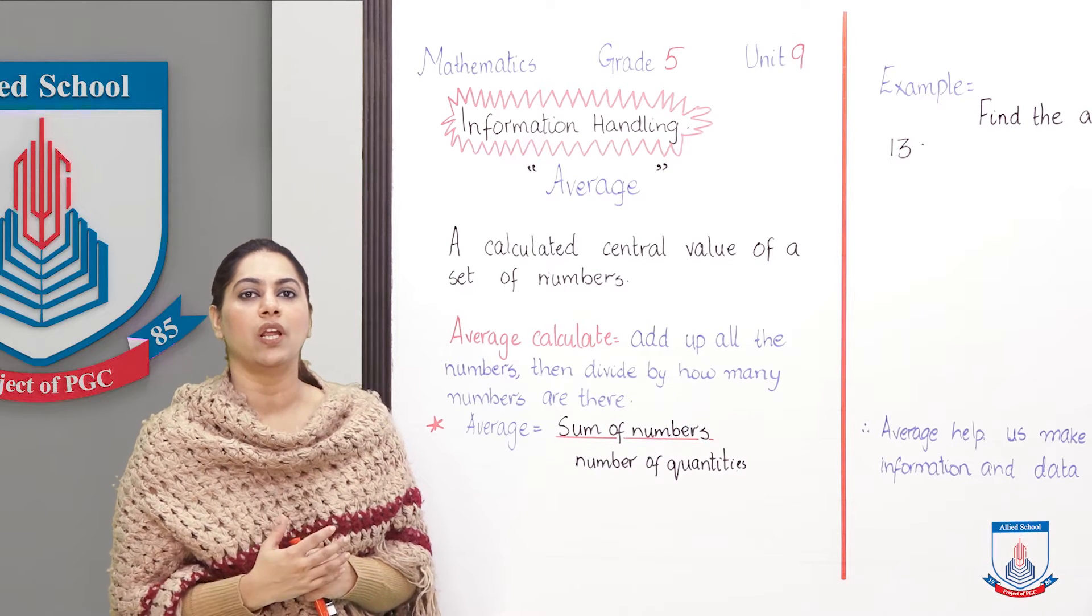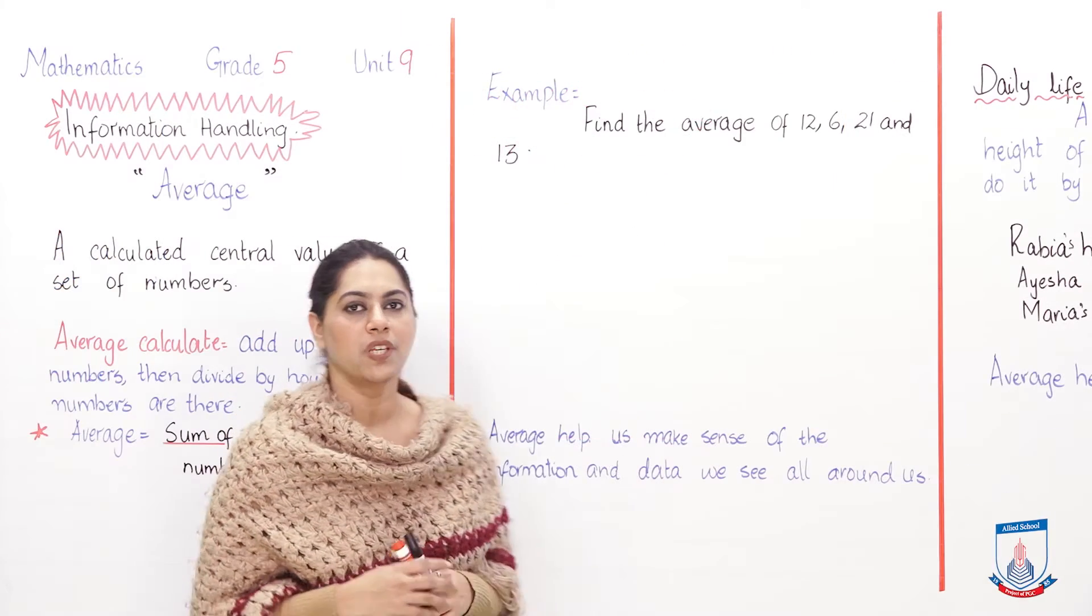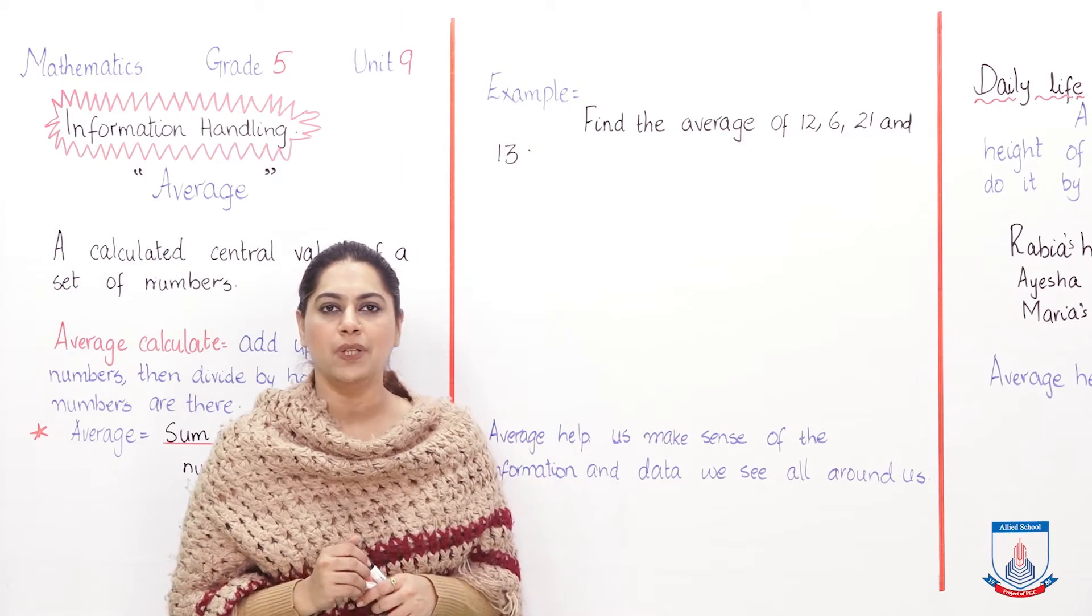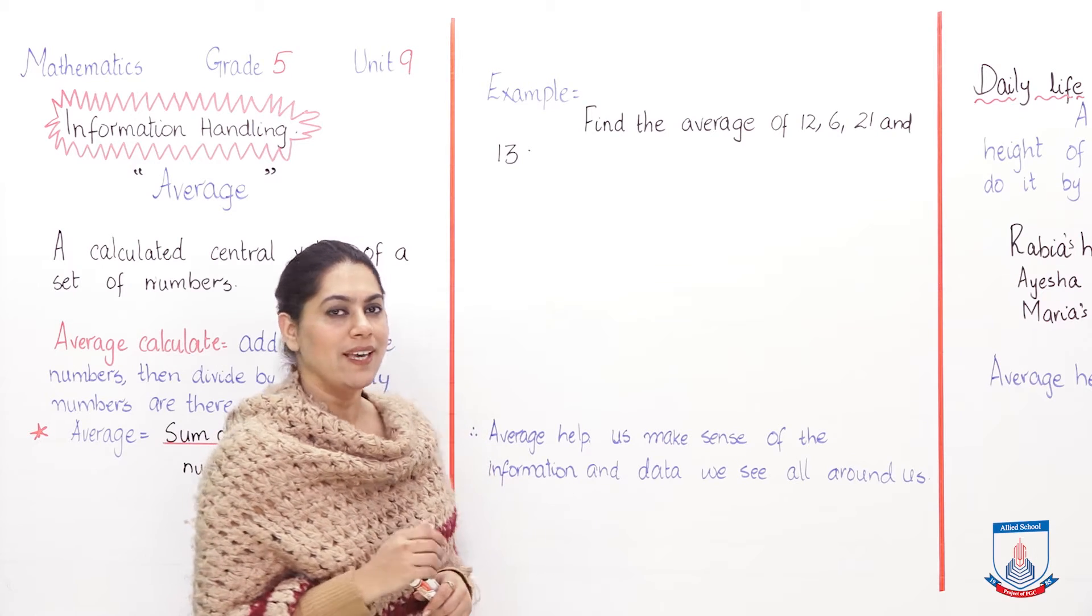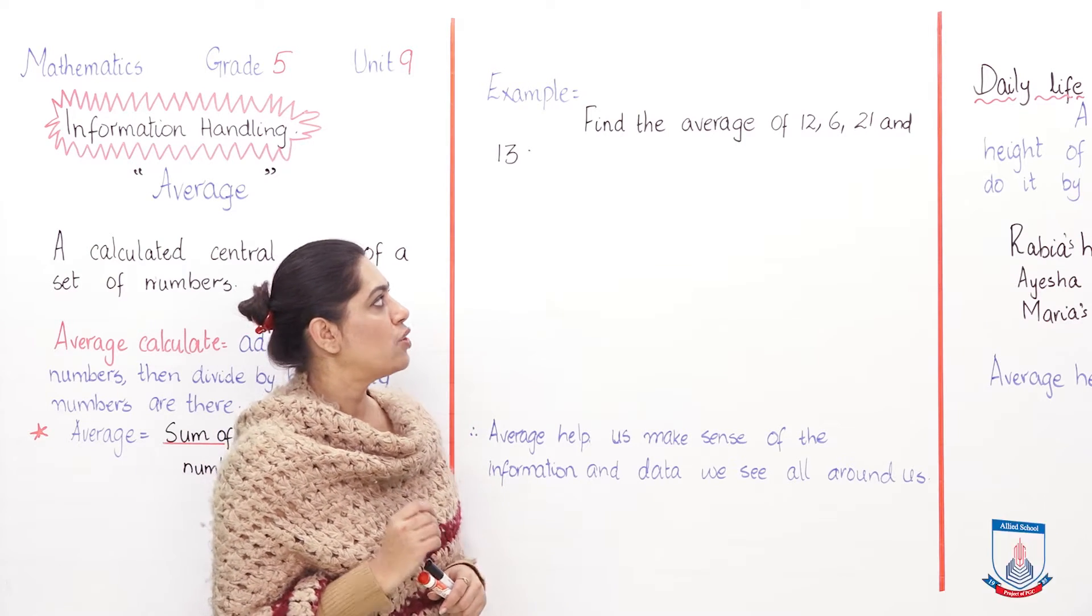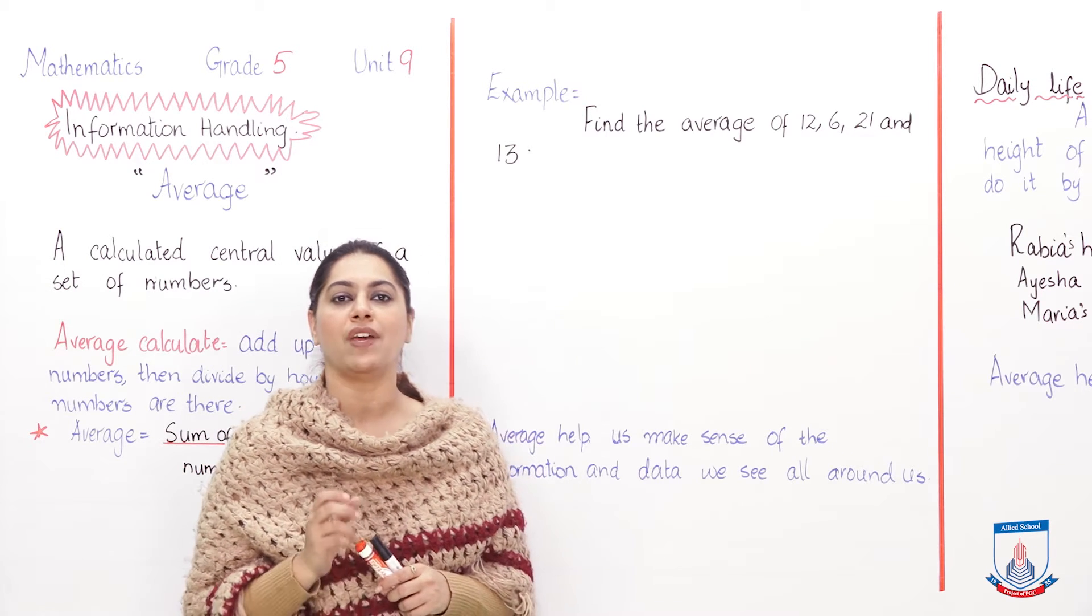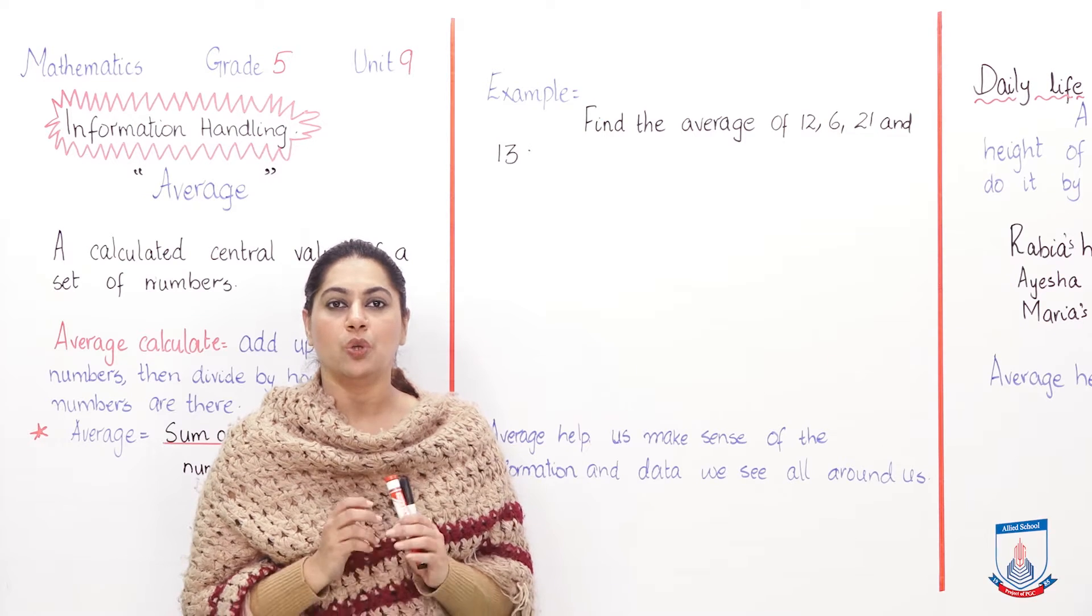So let's move towards the next board. Students, now we will find out the average through an example. The example is: find the average of 12, 6, 21, and 13.